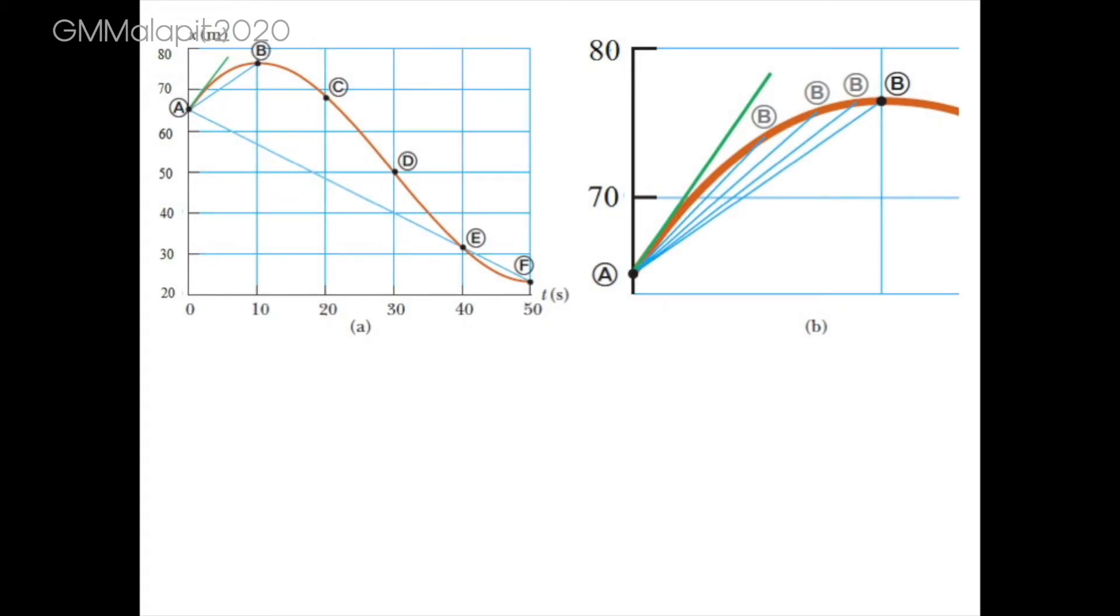Now, let us focus our attention on Figure B. As you can observe, the line between point A and point B becomes steeper and steeper as the two points become closer to each other, until the line becomes tangent to the curve as indicated by the green line.